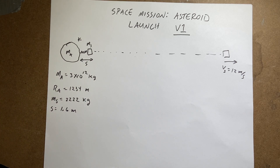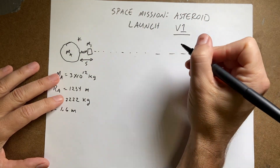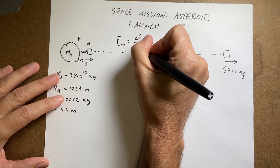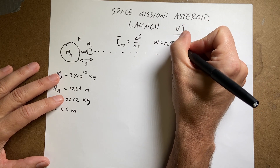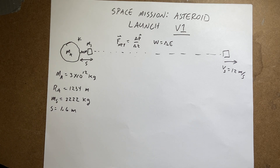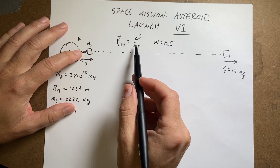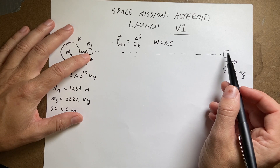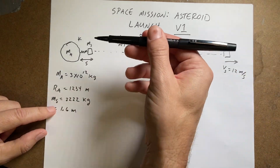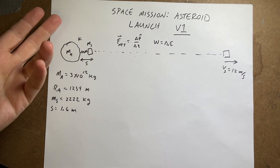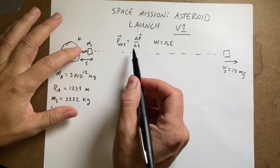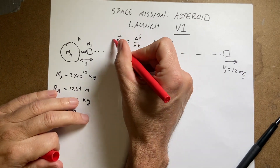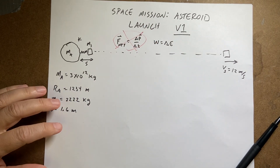When you think of a problem like this, you should think of the two big ideas: the momentum principle, which says F-net is the change in momentum divided by the change in time, and the work-energy principle, where work is the change in energy. The question is which would be better to use. If I use the momentum principle, there's a problem — as the spacecraft goes from here to there, the spring force and gravitational force both change, so force is not constant. Also I don't know the time or the distance, so this won't work very well.